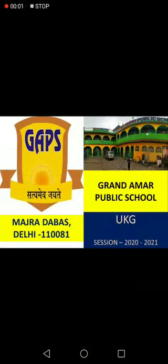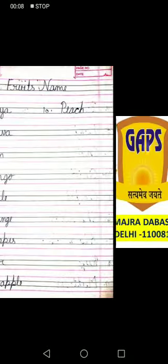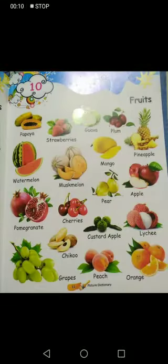Hello students of UKG class. Today we will do page number 11 of your picture dictionary book. See, this is your page number 11 and there is fruits. Fruits names we will remember today.